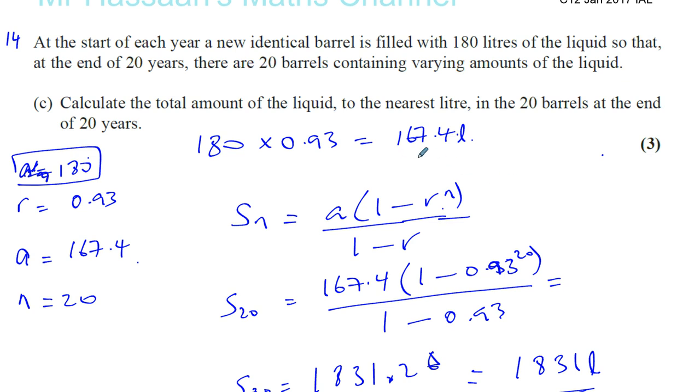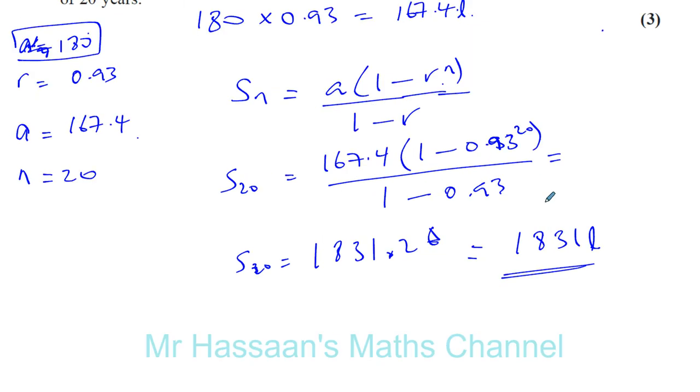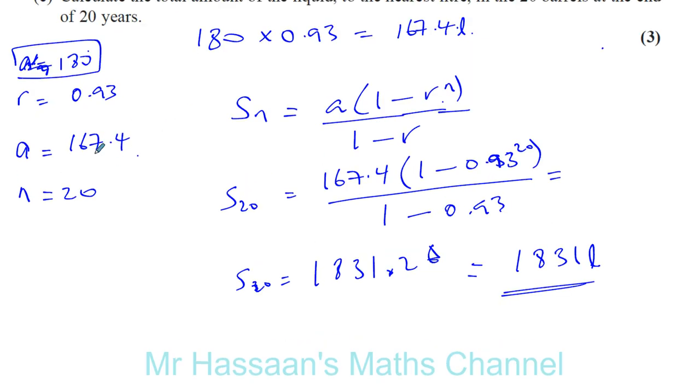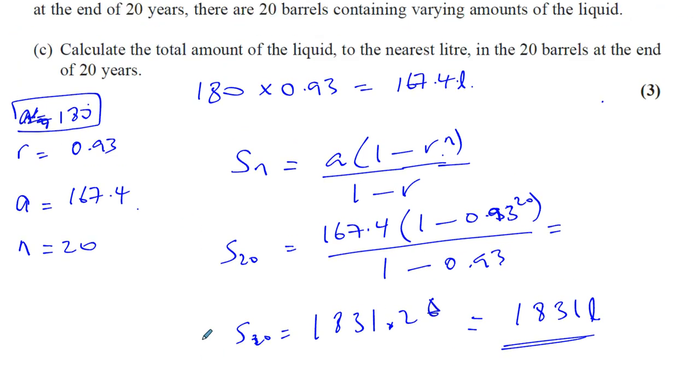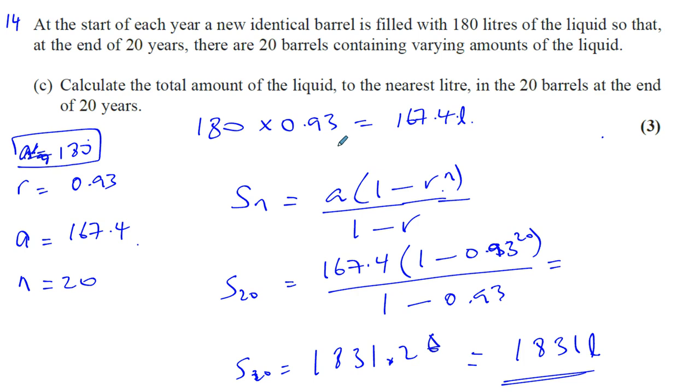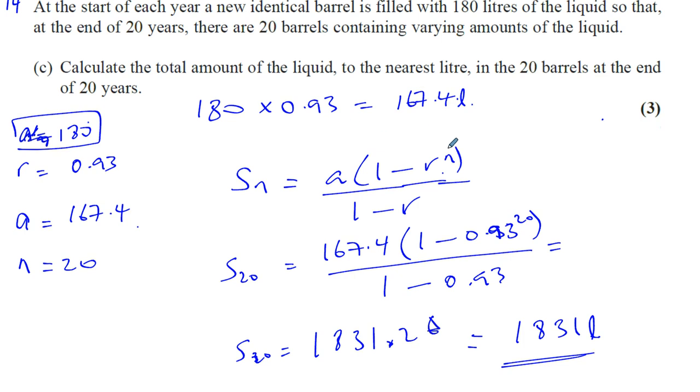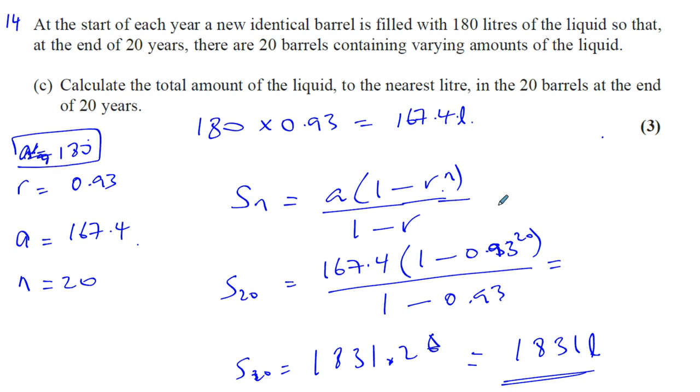So it's going to be 167.4, and then 0.93 less than that, then 0.93 less than that, and so on. And they're all added together, because it's 20 barrels all together. So we have to start with the end of the first year, not the beginning of the first year, as the first term over 20 years. I hope that was clear. So a slightly tricky little part to this particular question. Thank you for paying attention.